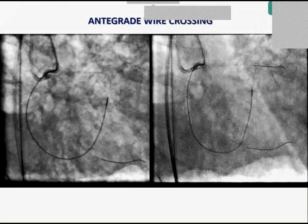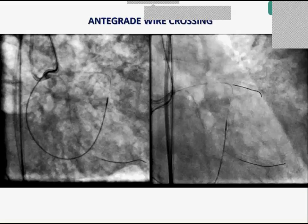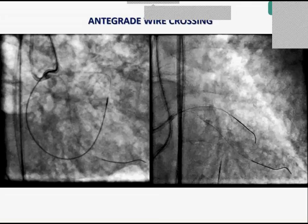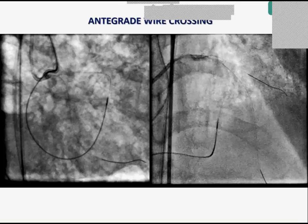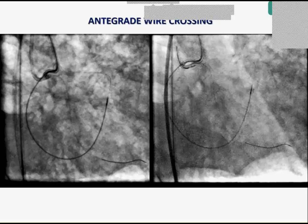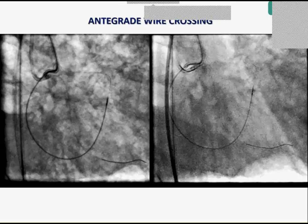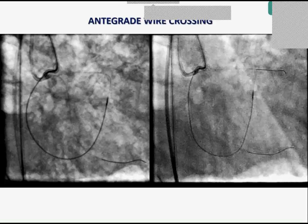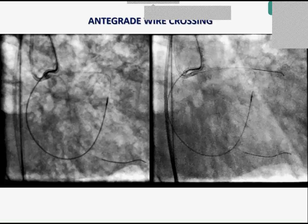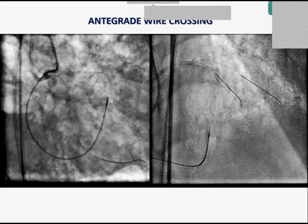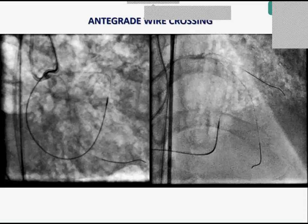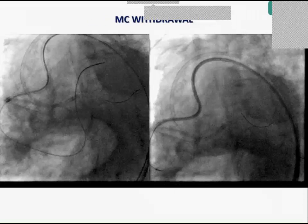Regarding the stenting plan: by default this is a left main bifurcation — a 1-1-1 Medina classification. After crossing, a double-stent technique is a must — pre-decided in my view. My decision was to do a mini-crush here.